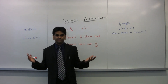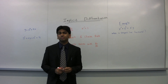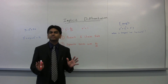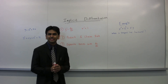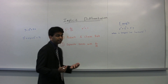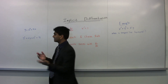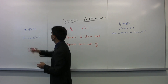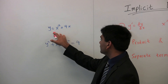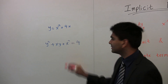What does implicit differentiation mean? Well, differentiation just means taking the derivative, and implicit just describes a function. A function can either be explicit or implicit. Implicit means it's implied; explicit means it's right there, explaining things to you. This is an explicit function because everything is in terms of x — y equals something in terms of x.